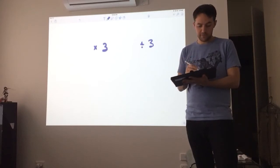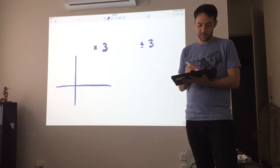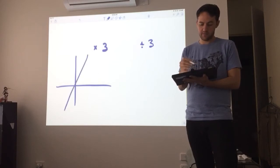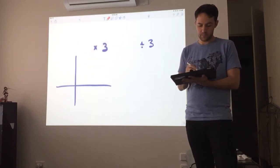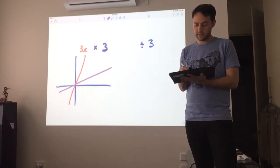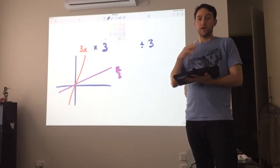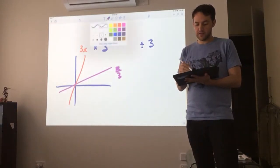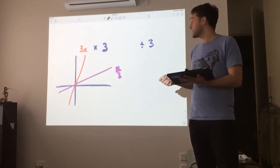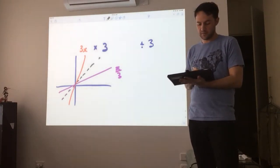Now on a graph, what this kind of means, the graph of say 3x looks like this, so this is 3x, and then on the other hand, the graph of x on 3 looks more like this. So what it means for these functions to be inverse, and this is true for all inverse operations, is that they have a line of symmetry down this middle here,